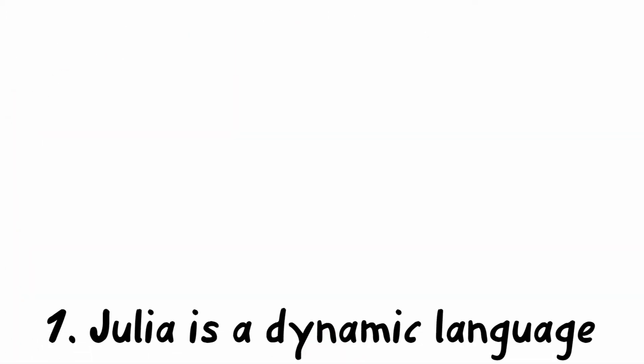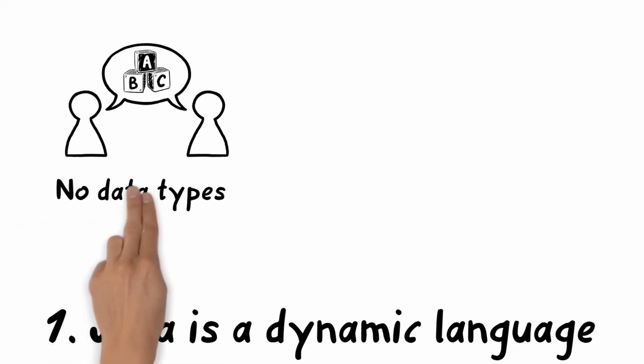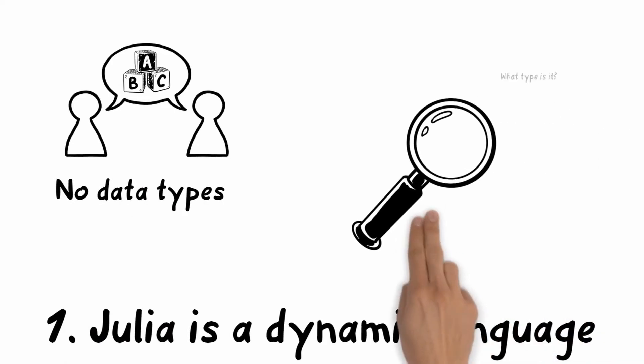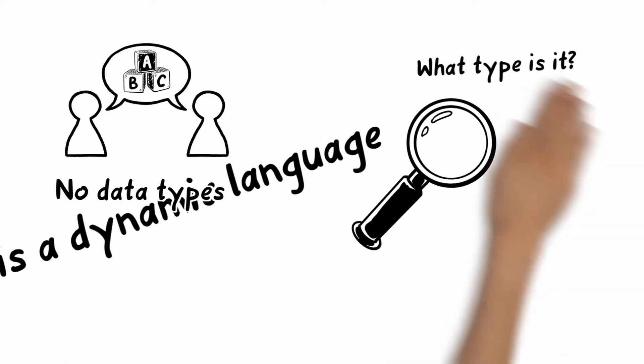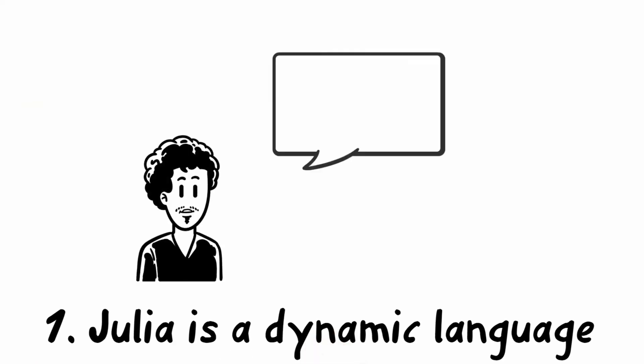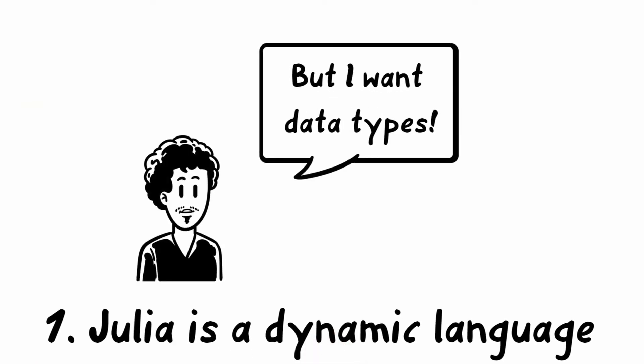The first point is that Julia is a dynamic language and easy to understand. This means that you don't have to define data types. Julia will find out the data type by its own. However, you have the possibility to define data types if you want. This can make your program even easier to understand.